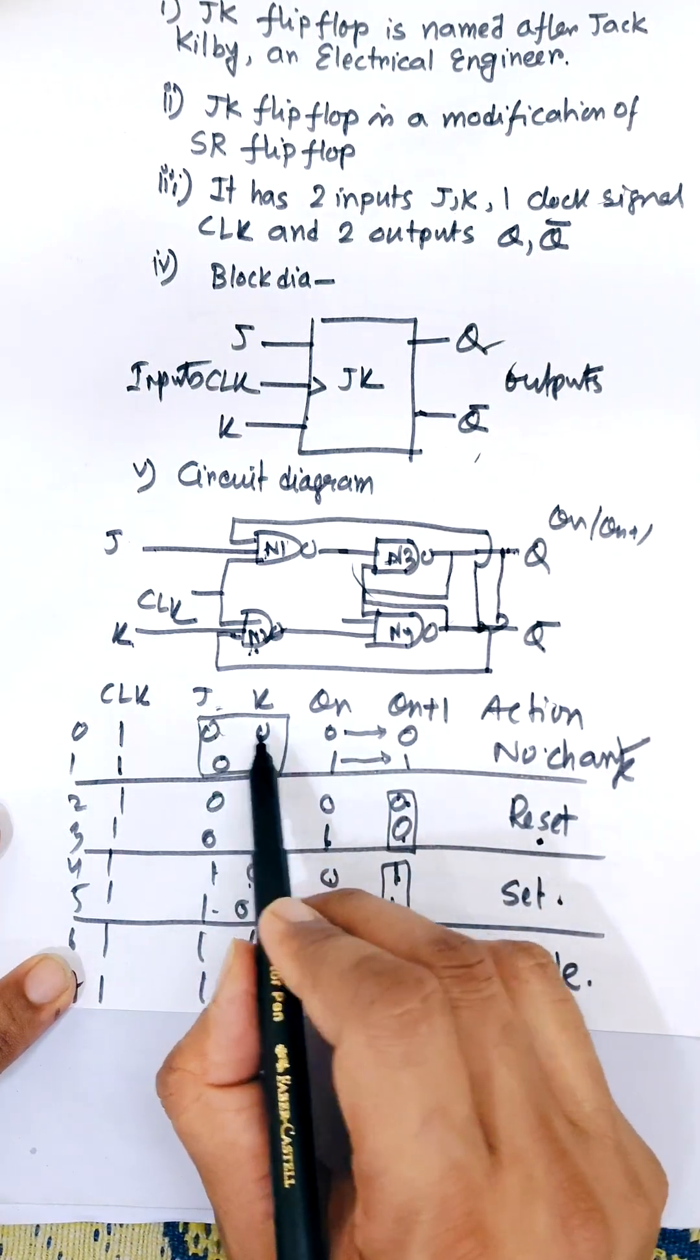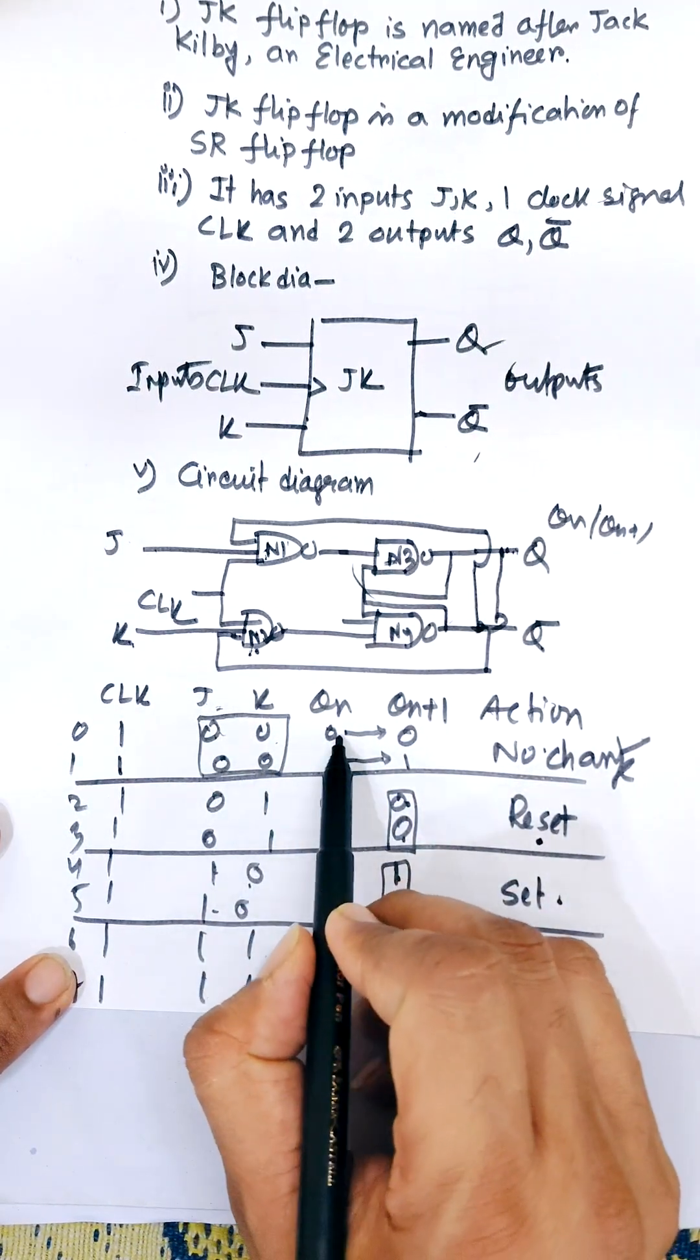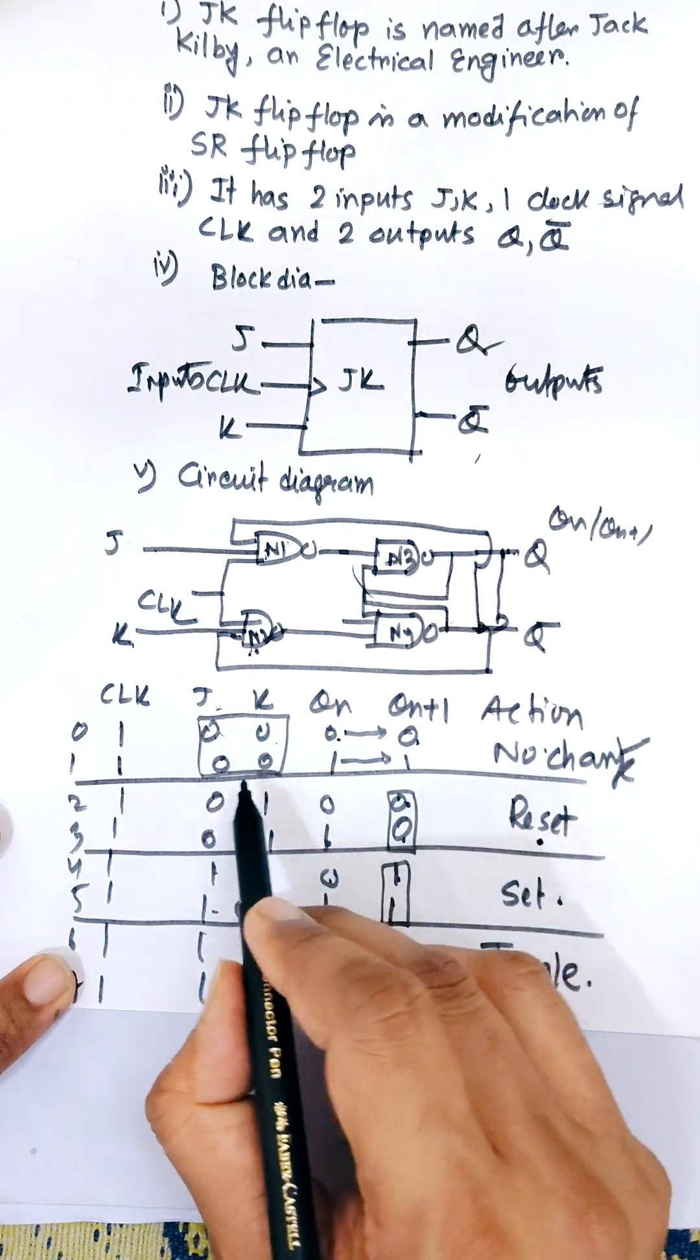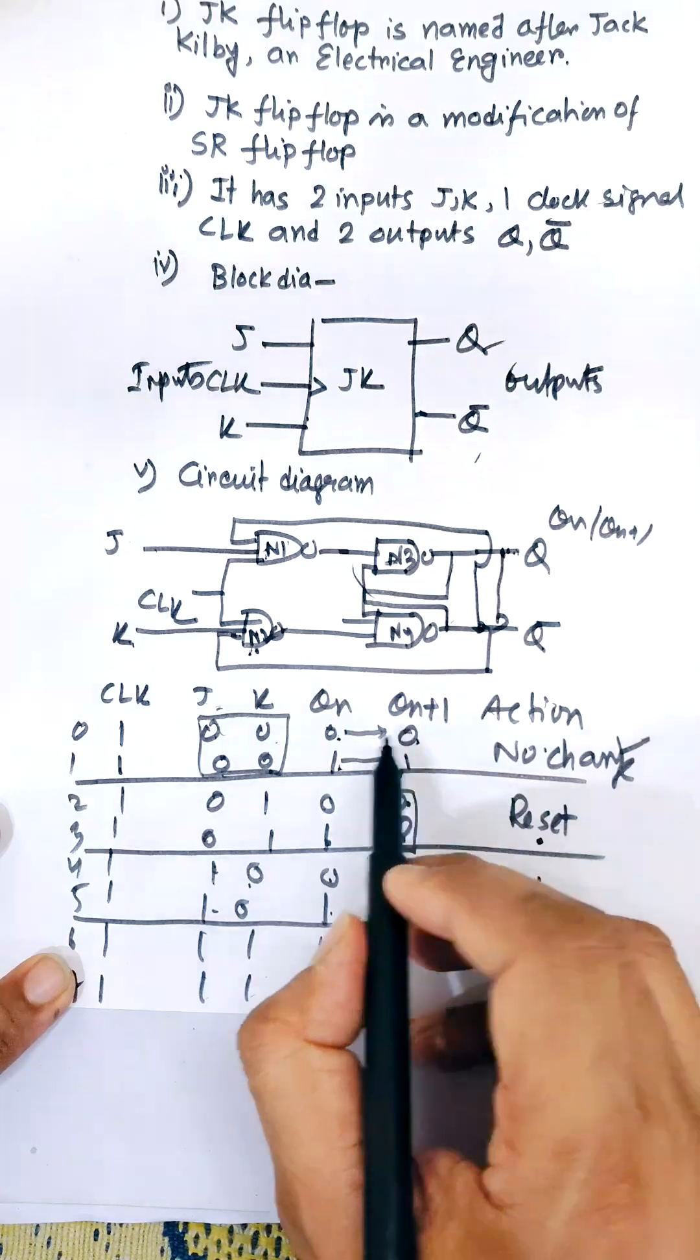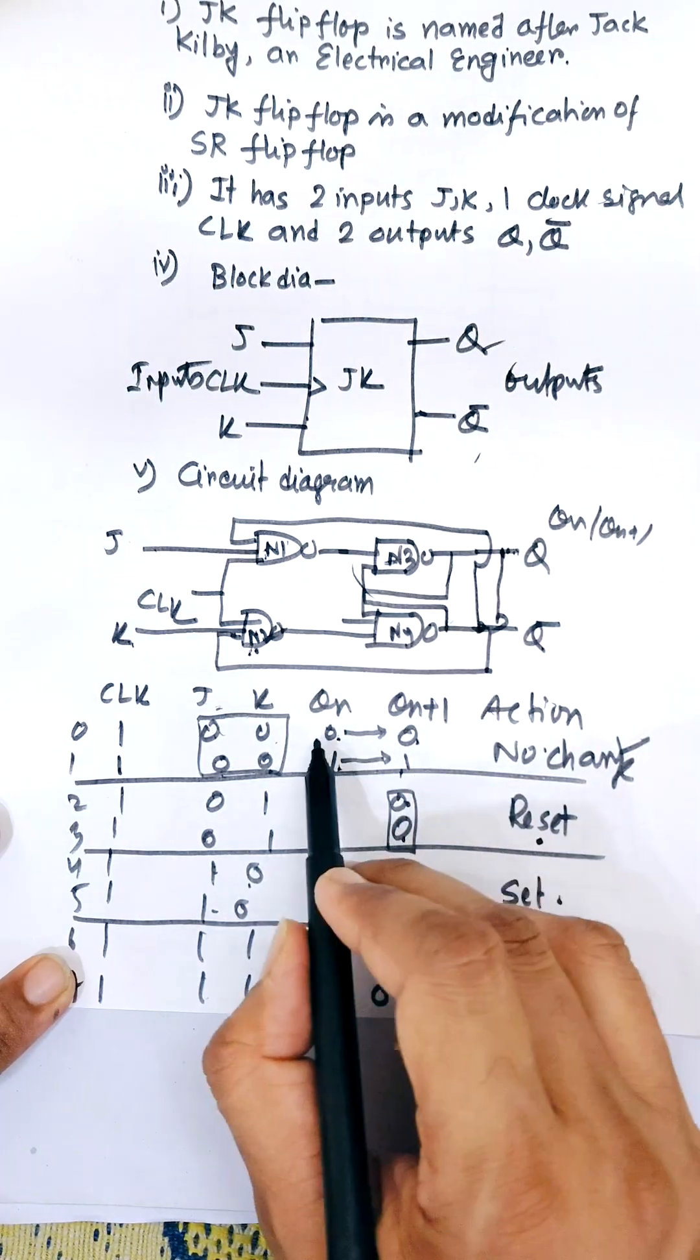When JK is 00, then 0 remains 0, next state is 0. When JK is 00, 1 remains 1. That means output next state is never changed. That means no change.